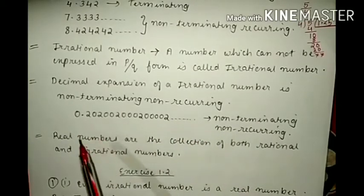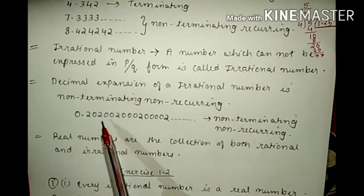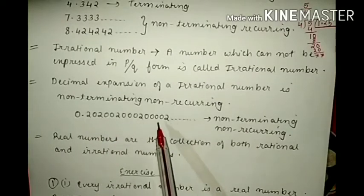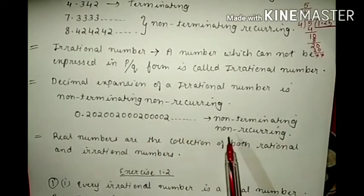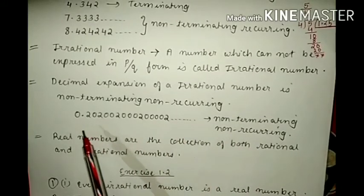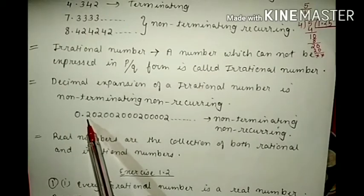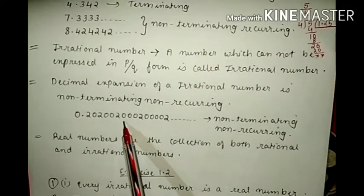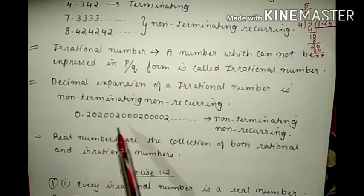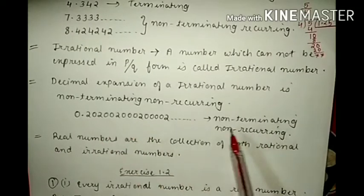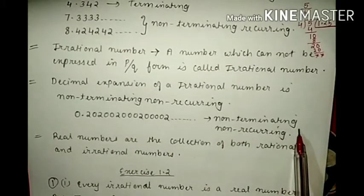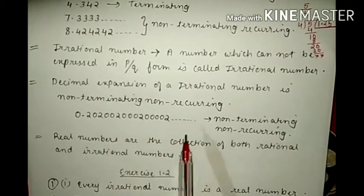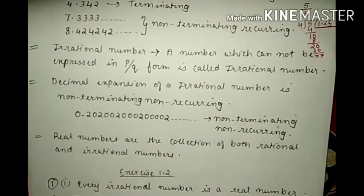For example, 0.20200200020000... — this is not terminating and it is not repeating either. First we have 20, then after that it is 200, then after that it is 2000. That means the numbers are not repeating. So it is non-terminating, non-recurring. These types of numbers are called irrational numbers.